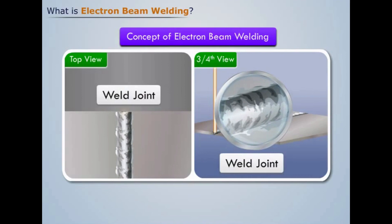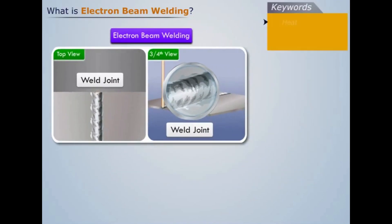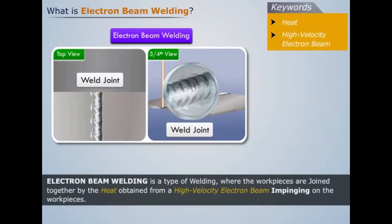This process of using electron beam for welding metals is known as electron beam welding. Thus we can say that electron beam welding is a type of welding where the metal pieces are joined together by the heat obtained from the high velocity electron beam impinging on the workpieces.